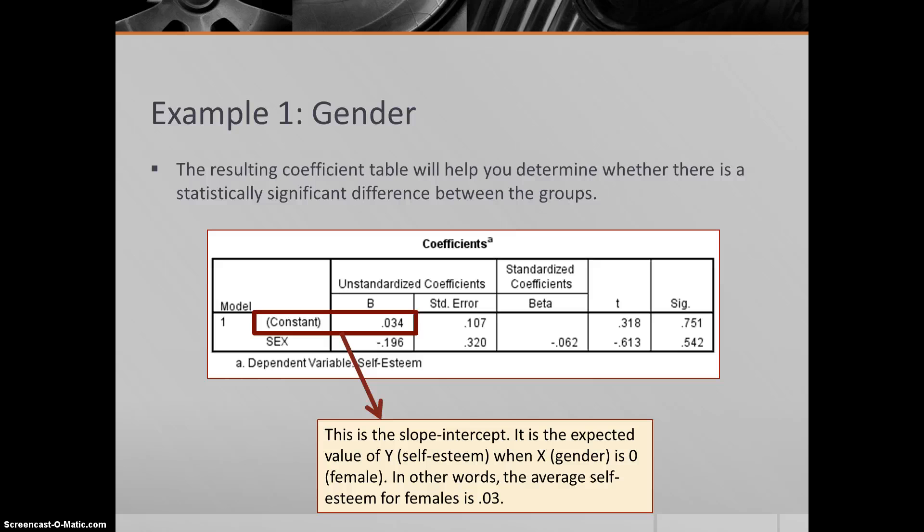Here's the coefficient table that comes out of this output from this analysis. Because there's only one predictor, this is really a simple linear regression. You have a slope intercept and you have the coefficient associated with x, with gender. The slope intercept is 0.03. Remember from the last class, the slope intercept is the expected value of y, self-esteem, when x, gender, is zero. You might think, wait a minute, what do you mean a gender of zero? Well, again, it's a dummy variable. One means male, zero means female. That means it's the average for females. The average self-esteem for females is 0.03.